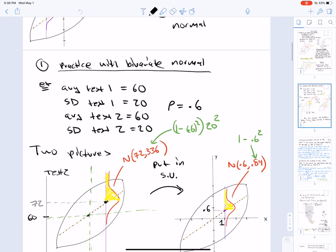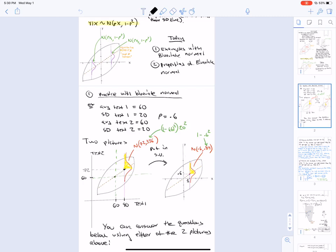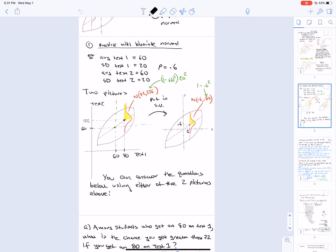So here's some practice with the bivariate normal. Let's say we have average of test 1 is 60, SD of test 1 is 20, average of test 2 is 60, SD of test 2 is 20, and Rho is 0.6. So we have really two pictures here. One is you can think of bivariate normal test 1 and test 2 as normal distributions. And the other picture is the standard bivariate normal where you put test 1 and test 2 into standard units.